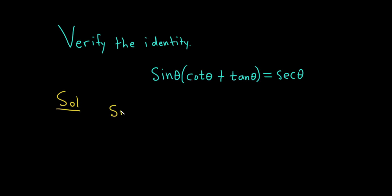So we have the sine of theta, in parentheses, cotangent of theta plus tangent of theta. And it's super important to actually write it down again — very, very key. A lot of times people will just follow through the work that's already written. It's better to take the extra time to write it out.